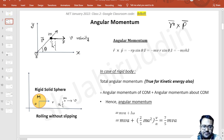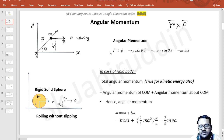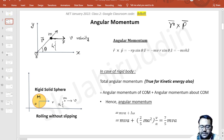This is a general rule: if a particle travels in a straight line at distance h from the axis, the angular momentum is mvh. There is a theorem stating that the total angular momentum of a rigid body equals the angular momentum of the center of mass — treating the whole rigid body as a point particle — plus the angular momentum about the center of mass.